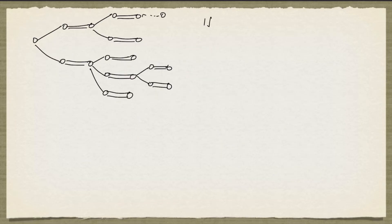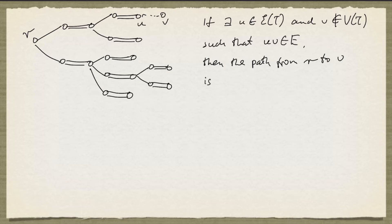So the key is, if there exists a node in the even set that is joined to a node not in the tree T, then the path from R to V is an M-augmenting path. Notice that V cannot be M-covered, because if it was M-covered, we would have added UV and the matching edge containing V to the tree, so we wouldn't have stopped growing the tree at that point.